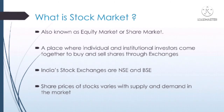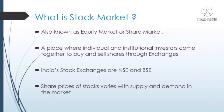Here supply means number of shares available in the market and demand means number of buyers available for buying those shares. For example, suppose in the market there are 100 shares available — that means supply is equal to 100. But there are only 10 people available to buy those 100 shares, so demand is equal to 10. These buyers will demand that the price should be reduced so that they will be ready to buy those 100 shares. As supply is more and demand is less, the buyers will have an advantage and the stock price will be falling.